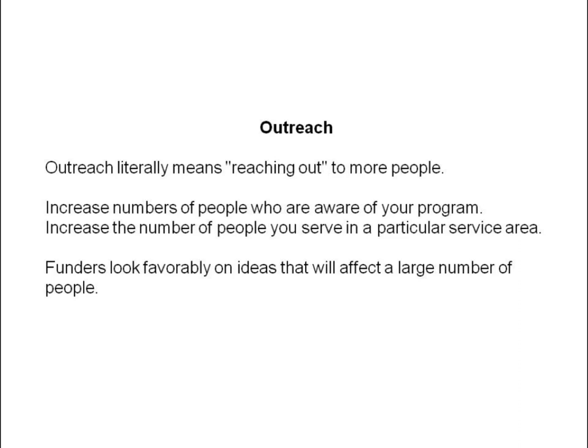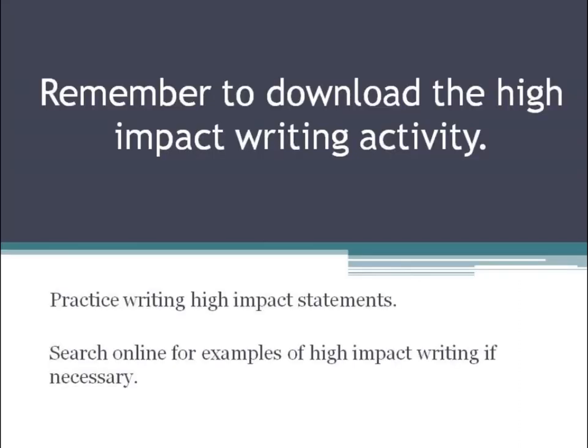How might you be able to reach even more people or have a greater impact? Outreach has to do with trying to reach out to more people. What ideas can you come up with? Will you ask for funding for a social media person to set up Facebook or Twitter? Will you collaborate with another agency in another part of the state, country, or globally? You want to be able to increase the number of people who are aware of your program. Those are the three primary components of high-impact grant writing: influence, outcome, and outreach.